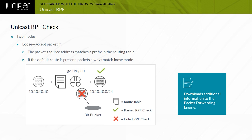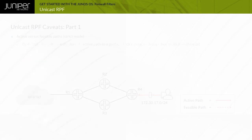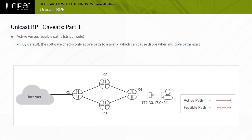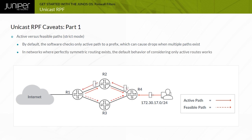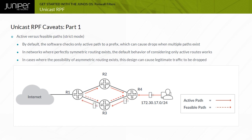In general, using the default strict mode provides the best results. By default, when a Junos device performs its RPF check, it considers only the active routes to a given destination. In networks where perfectly symmetric routing exists, this default behavior should work. However, in cases where asymmetric routing or different forward and reverse paths exist, this design can cause legitimate traffic to be dropped.